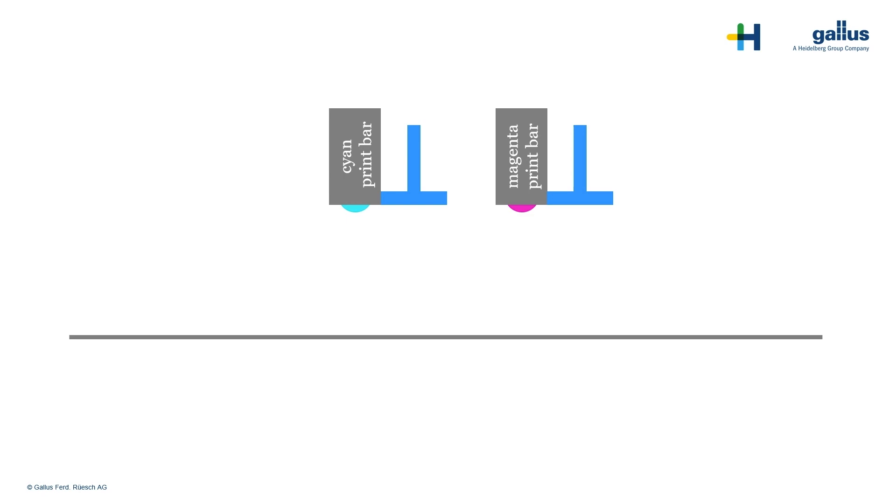You know already the cyan and the magenta print bar. Each one is followed by a pinning lamp. Now they are switched on. Again, the cyan drop is jetted out of the nozzle. Our drop lays down on the substrate and will be carried to the next print bar. But now it passes by the pinning lamp and receives UV light. In visual words, the drop gets a little skin.